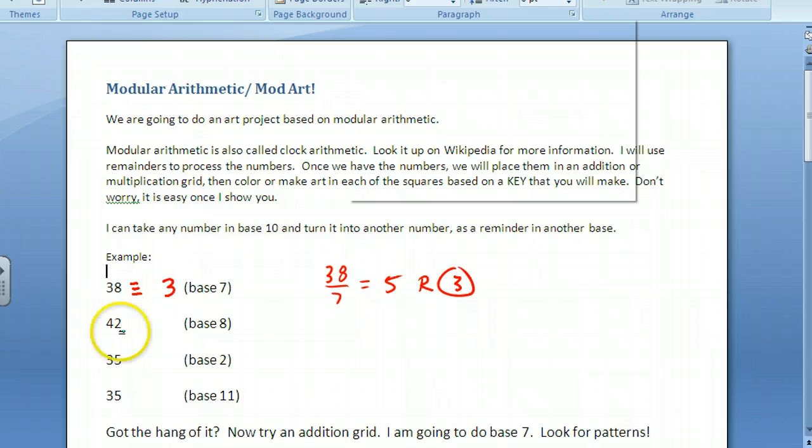Now if I do 42 base 8. So base 8 is different. So I do this, and then 8, I kind of end up with the same thing. It's 5, and then it's going to be remainder 2. So now this would be equivalent to 2 base 8.